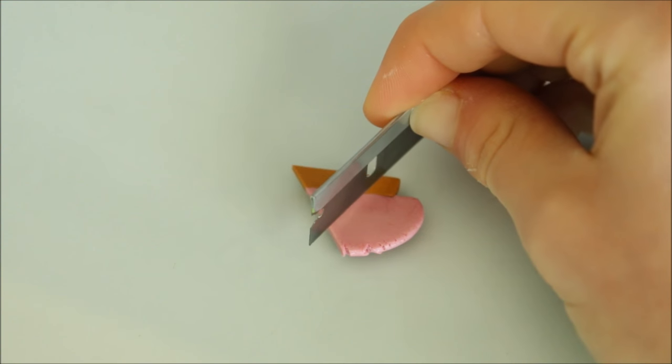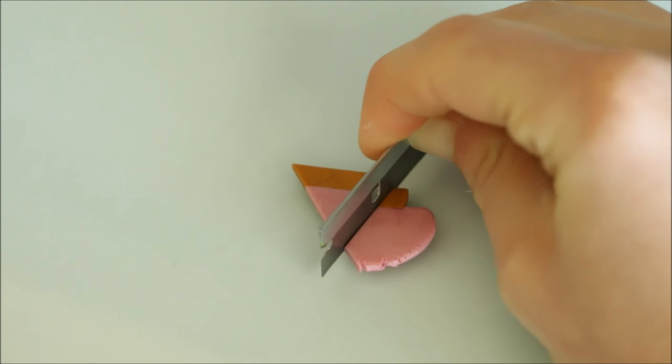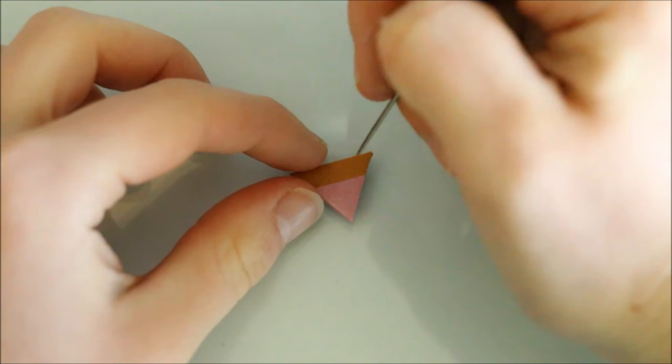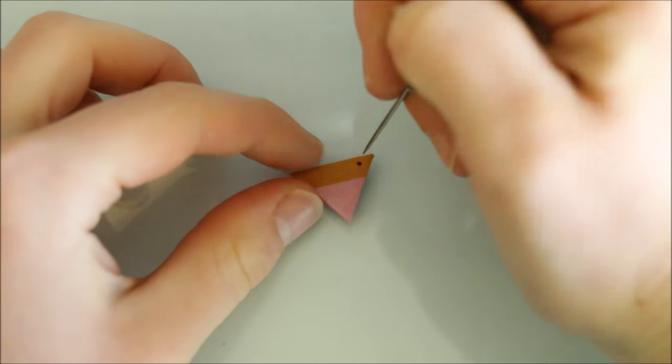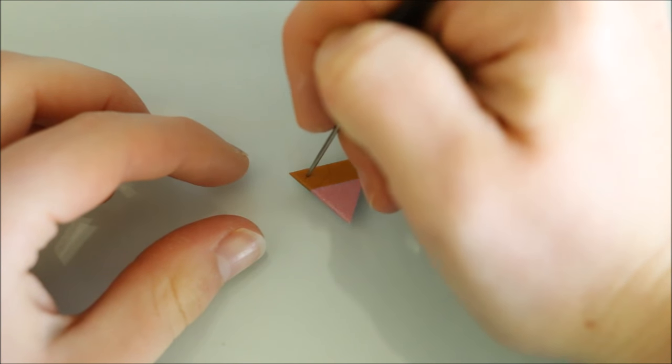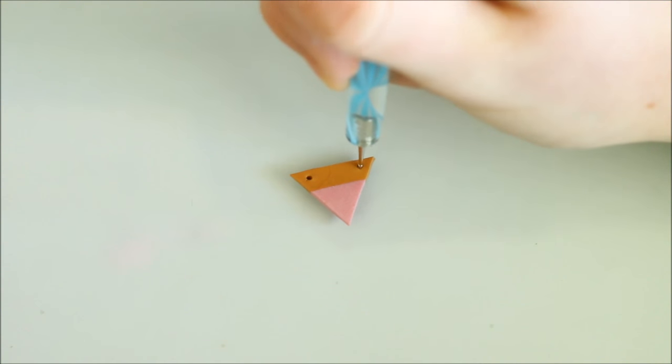Once I positioned them together I then trimmed off the edges to get the triangle look I was going for. I then took my needle tool and created two holes at the top where the chain could go and then I used a dotting tool to make them slightly larger.